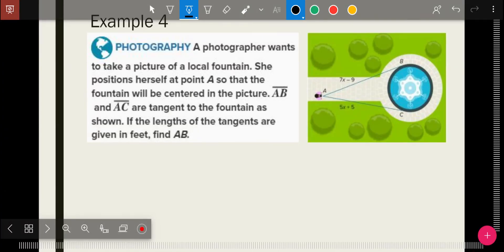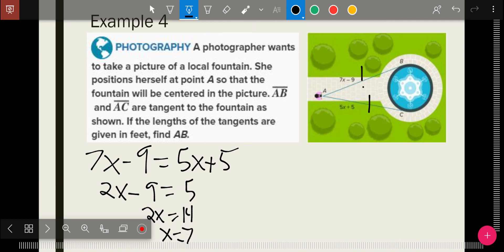Last but not least, a photographer wants to take a picture of a local fountain. She positions herself at point A so that the fountain will be centered in the picture. Segments AB and AC are tangent to the fountain, as shown. If the lengths of the tangents are given in feet, find AB. And so, again, we're saying that both of these lines are tangents. And if they're both tangents, then they are congruent. And so 7x minus 9 equals 5x plus 5. Minus 5x from both sides. I add 9 to both sides. Divide by 2. Now, the last step I have to do is plug in AB equals 7x minus 9. 7 times 7 is 49. Minus 9 is 40. And it said in feet.